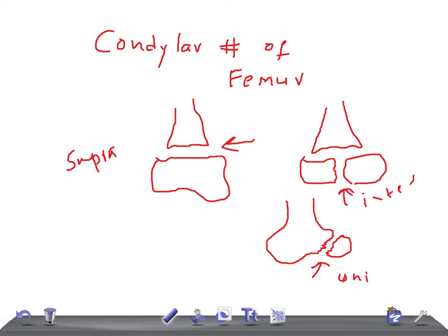Treatment depends on the fracture type. For unicondylar fractures, if undisplaced, a long leg cast is given for three to six weeks, followed by protected weight bearing. If the unicondylar fracture is displaced, treatment is open reduction and internal fixation with multiple cancellous screws.